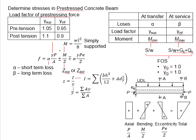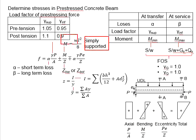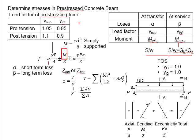Next, we look at the moment. The moment is obtained from the bending moment diagram acting on the member. For a simply supported beam, the formula for the moment is WL²/8, where W is the UDL and L is the effective span of the beam. For beams other than simply supported, such as a continuous beam, you will need to perform moment distribution to work out the bending moment diagram, and then substitute the value into the moment equation.